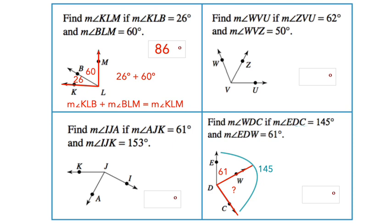when we apply part plus part equals whole, it's 61 plus something equals 145. So we can write this equation. We can solve for X by subtracting 61 degrees from both sides. Grab a calculator and you get that X or the measure of angle WDC is 84 degrees. Please solve the remaining two problems that are on this slide.